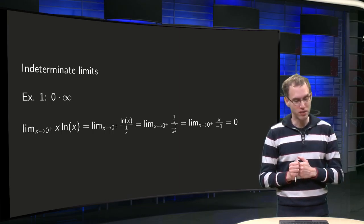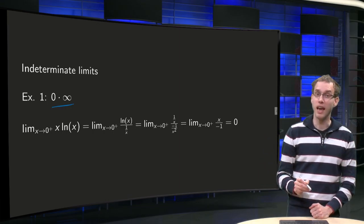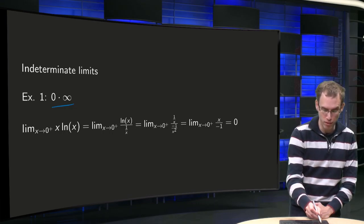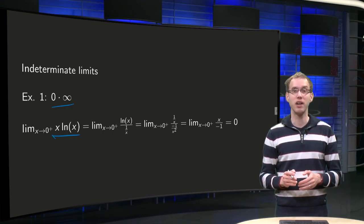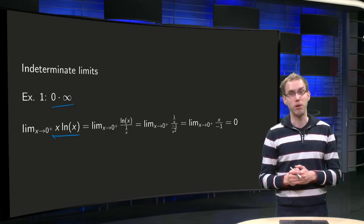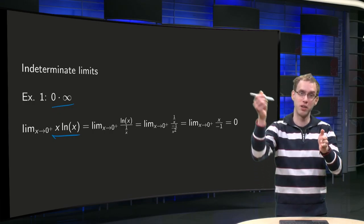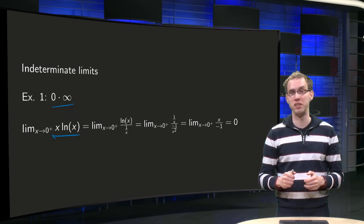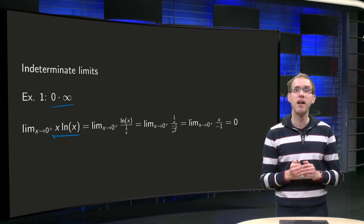Let us start with the 0 times infinity case: limit as x approaches 0 from above of x times ln(x). Well, x goes to 0, and ln(x) has a vertical asymptote, so if x approaches 0, ln(x) goes to minus infinity. So in fact we have 0 times minus infinity here.